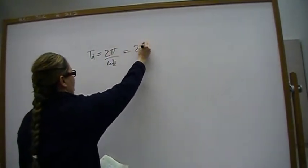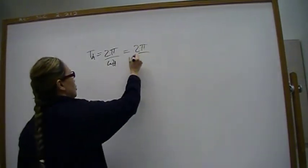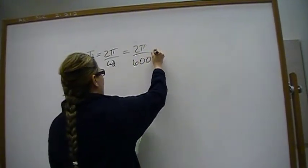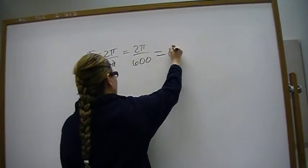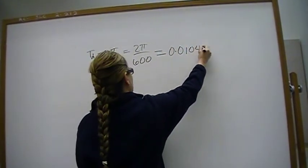That's 2 pi. And we have found omega d to be 600. And that is going to be 0.01047.